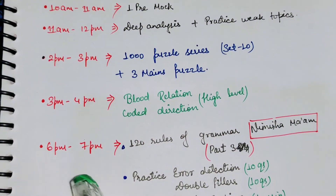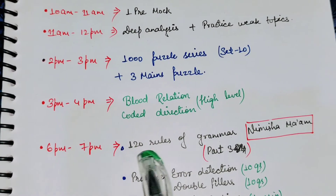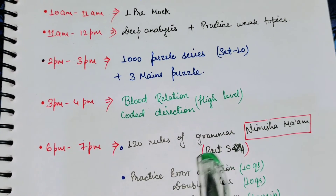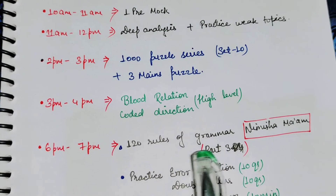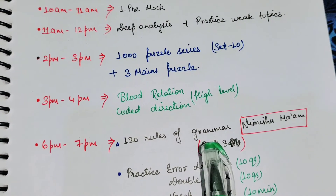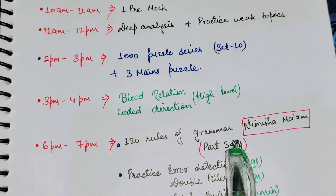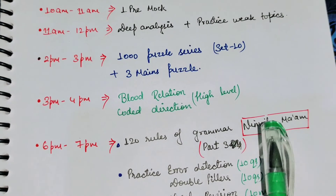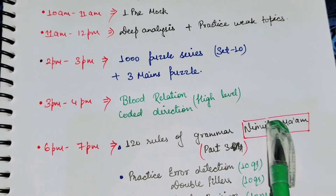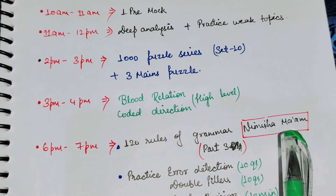From 6 PM to 7 PM, you have to watch the 120 Rules of Grammar — today is Part 3. Parts 1 and 2 are already done, so now you have to complete Part 3.